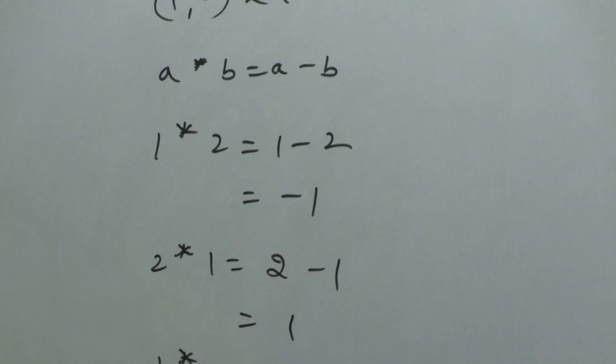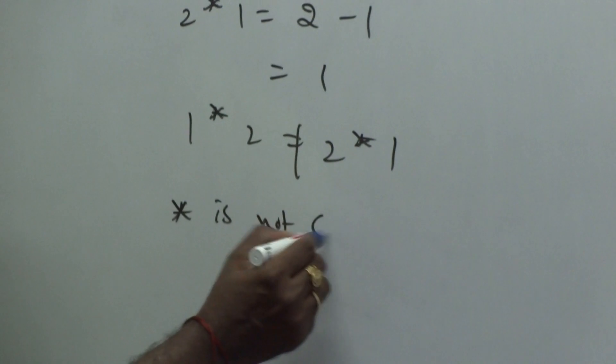1 star 2 is not equal to 2 star 1. Star is not commutative.